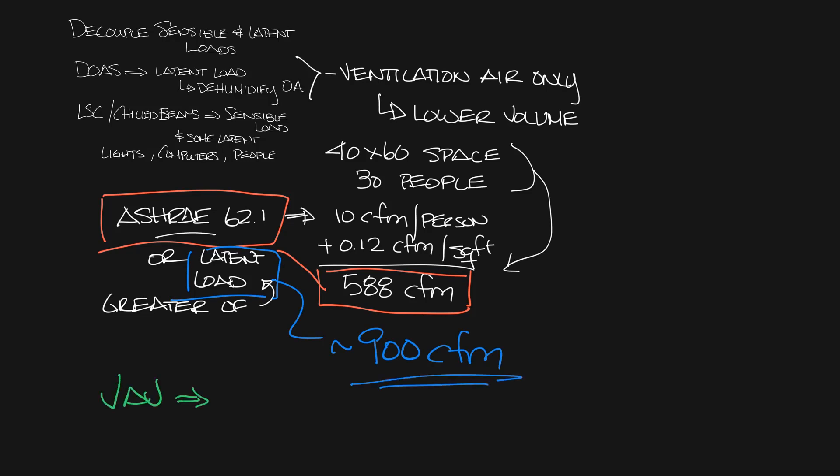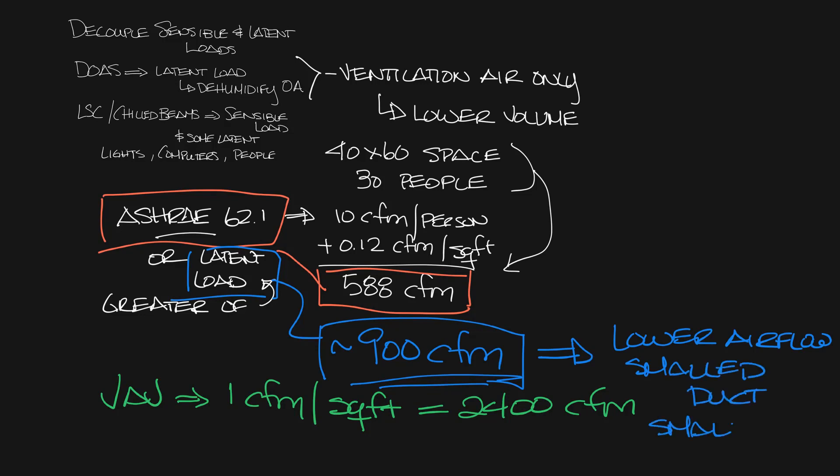Now compare that to a VAV system at 1 CFM per square foot gives you 2400 CFM. You can see that 900 CFM you need for this system where we decouple the sensible latent load is the lower airflow, which means you'll have smaller duct work, and a smaller fan, which means a reduction in first cost and energy cost.